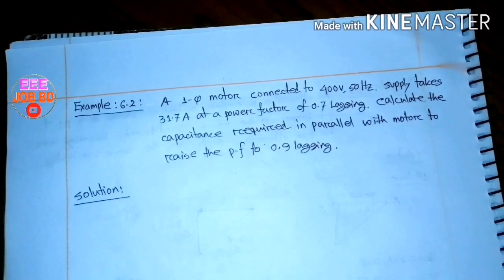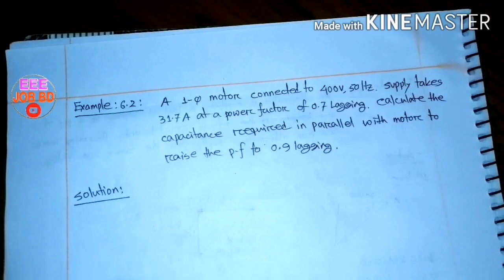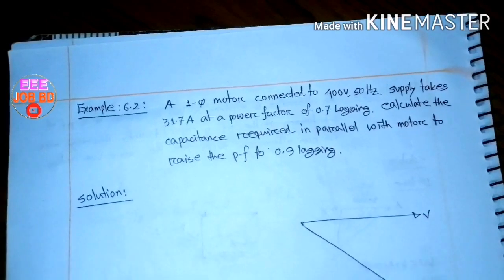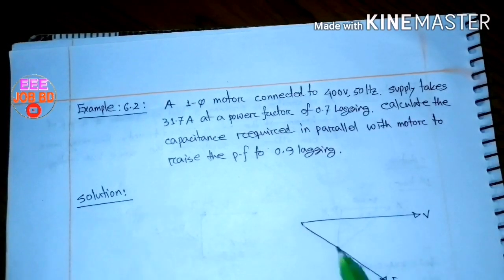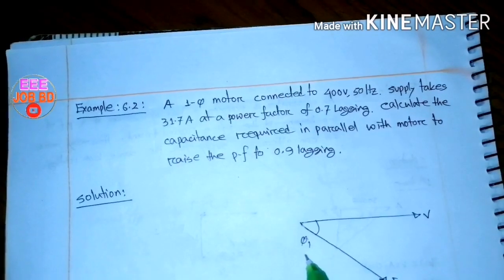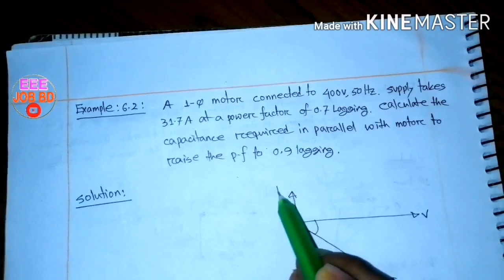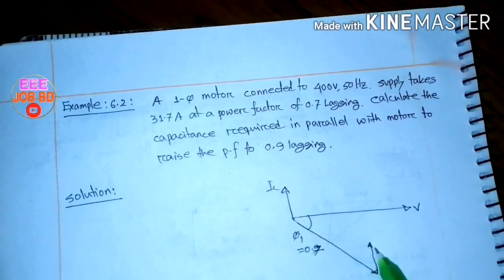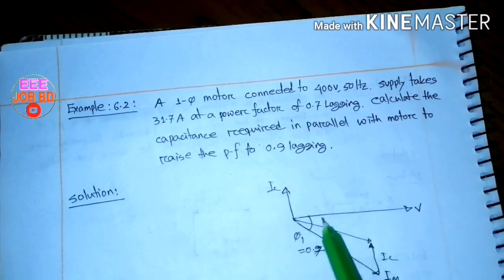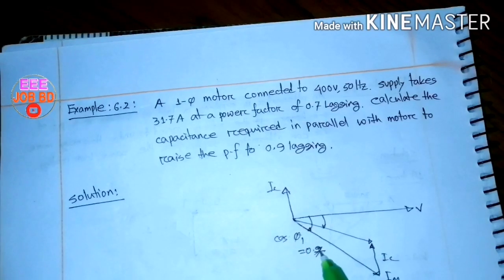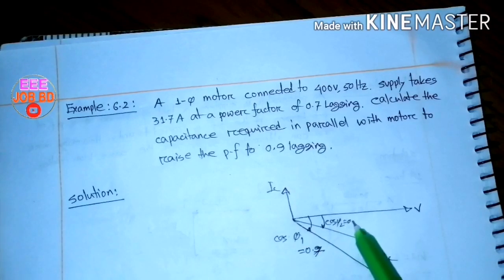The first condition is 0.7 lagging power factor with 31.7 amperes current. A capacitor is connected in parallel with the motor to raise the power factor to 0.9 lagging. We draw the vector diagram. The voltage is the reference. We have phi1 angle for cos phi equal to 0.7 and phi2 angle for cos phi equal to 0.9.